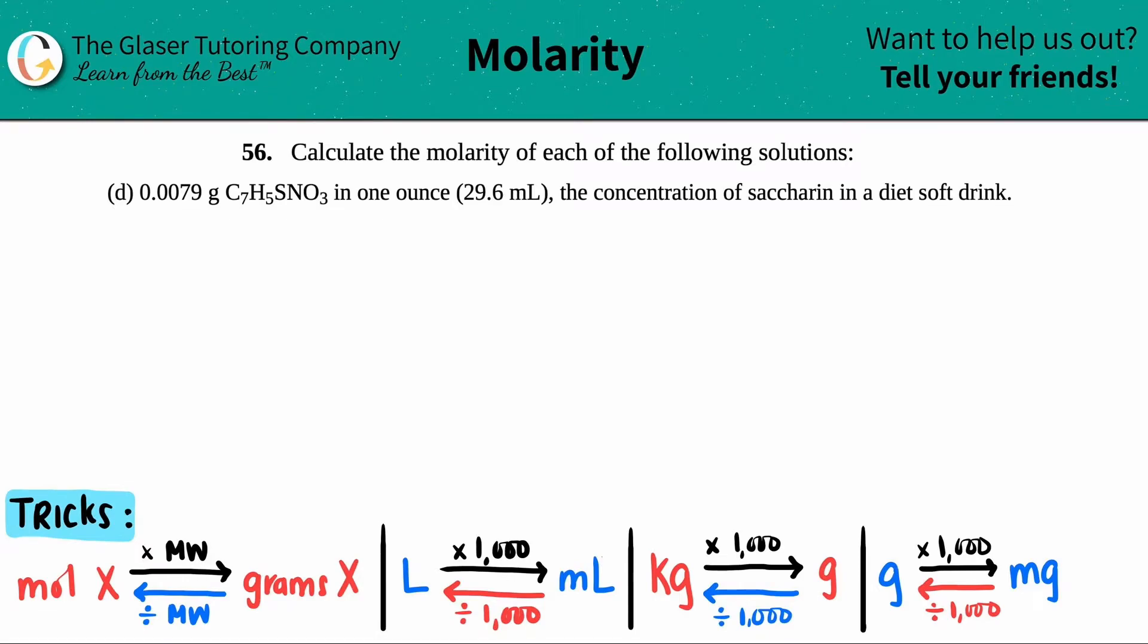Number 56: Calculate the molarity of each of the following solutions. In this case we have 0.0079 grams of C7H5SNO3 in one ounce, which is 29.6 milliliters. This is the concentration of saccharin in a diet soft drink.